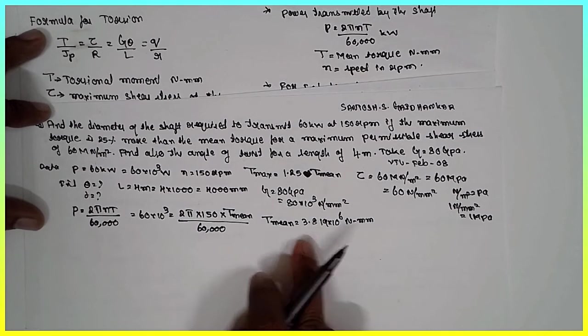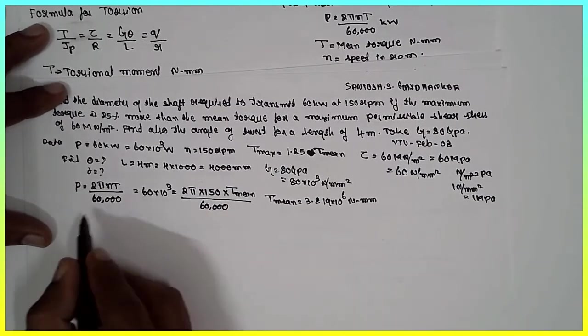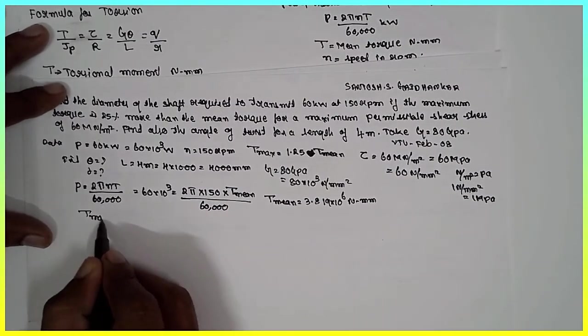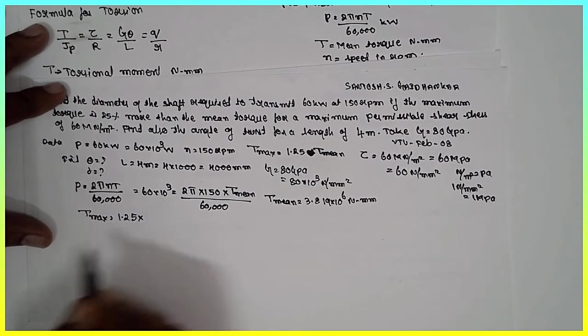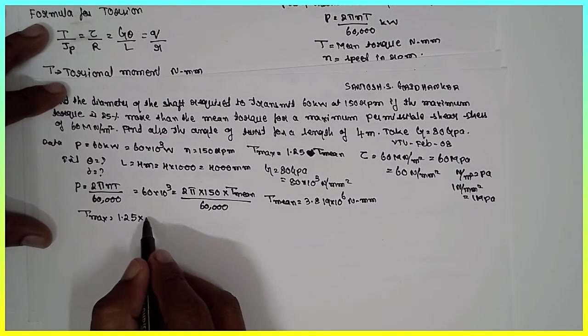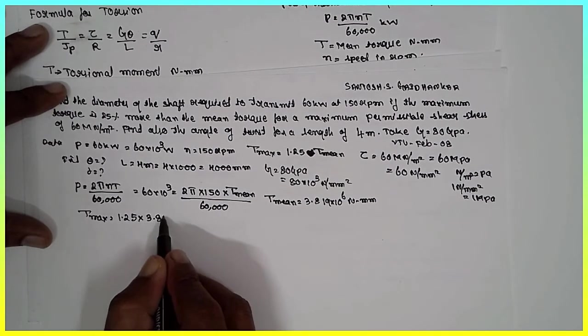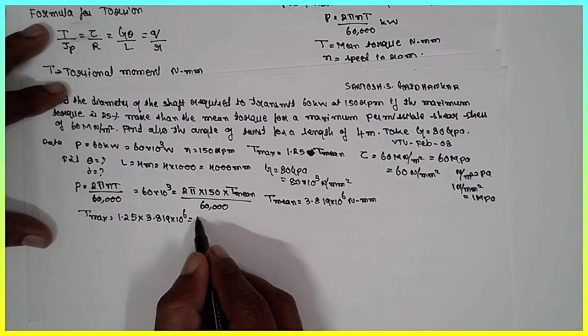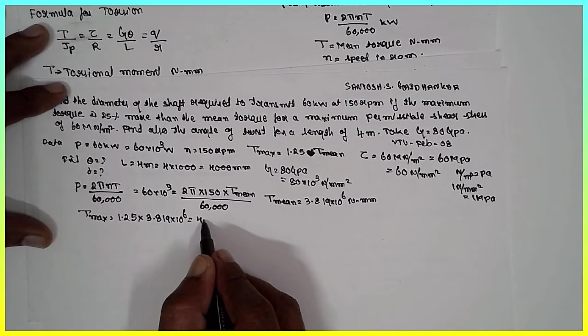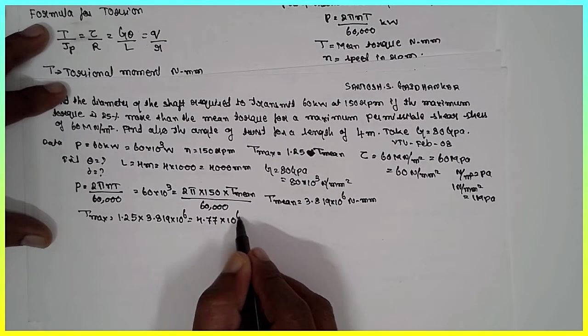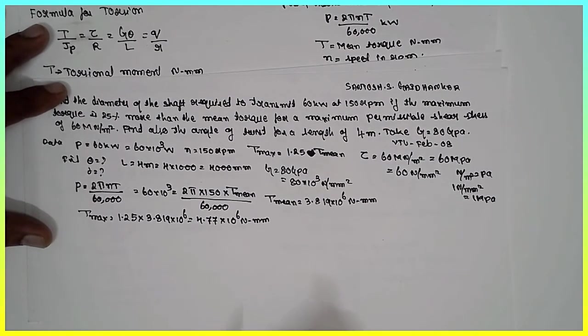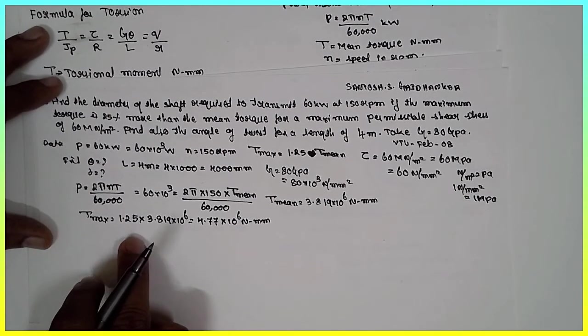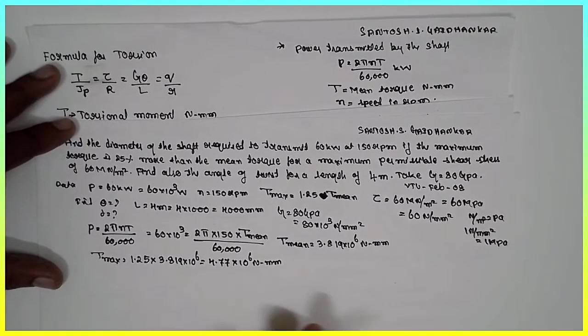After getting the T mean, substitute here in the T max. T max is nothing but 1.25 times 3.819 times 10 raised to 6 Nm. After getting the T max, substitute in this formula in order to obtain the diameter.